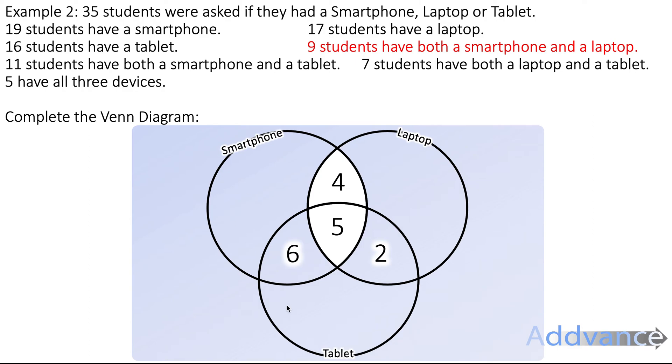Now we can start filling out in the outer parts. So we know that 16 students have a tablet. So we look at the tablet circle and we know that this entire circle must add up to be 16. 6 plus 5 plus 2 is 13. Plus 3 would be 16. So the missing number is 3. Again, in the laptop section, we must add up to make 17. 4 plus 5 plus 2 is 11. So we need another 6 to make 17. And then finally we have 19 students have a smartphone. 6 plus 5 is 11. Plus 4 is 15. We will need 4 more to get to 19.